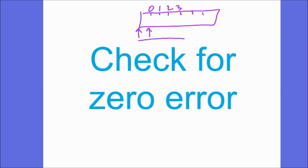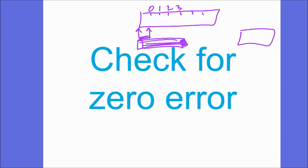For example, if I measured a pencil with a ruler that has a zero error, it might look to be about three and a half centimetres long, but there's an offset at the start. Check for zero error — it could also be that your stop clock doesn't start at zero, or that you've got a top pan balance with a weighing boat on it that you haven't zeroed. That would also be a zero error.